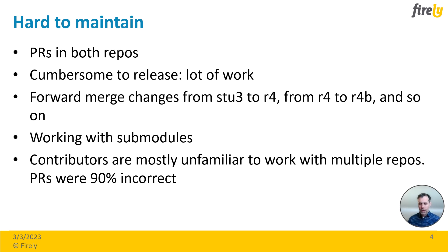This whole structure was a bit hard to maintain. For example, when we made a pull request for common, we also had to make a pull request for main because of the git submodule — we had to update the git module pointer. Releasing was also hard work; we had to forward-merge all changes from develop S2.3 to R4, from R4 to R4B, and from R4B to R5, which cost a lot of time and also introduced some merge errors which were hard to solve. Working with submodules was in the beginning a steep learning curve, and we also see that contributors creating pull requests have some problems with it because it's not really common.